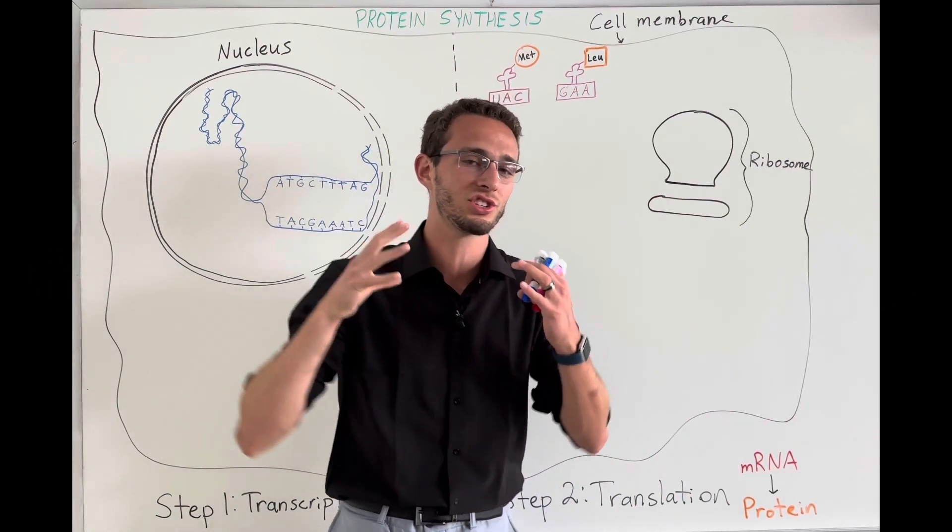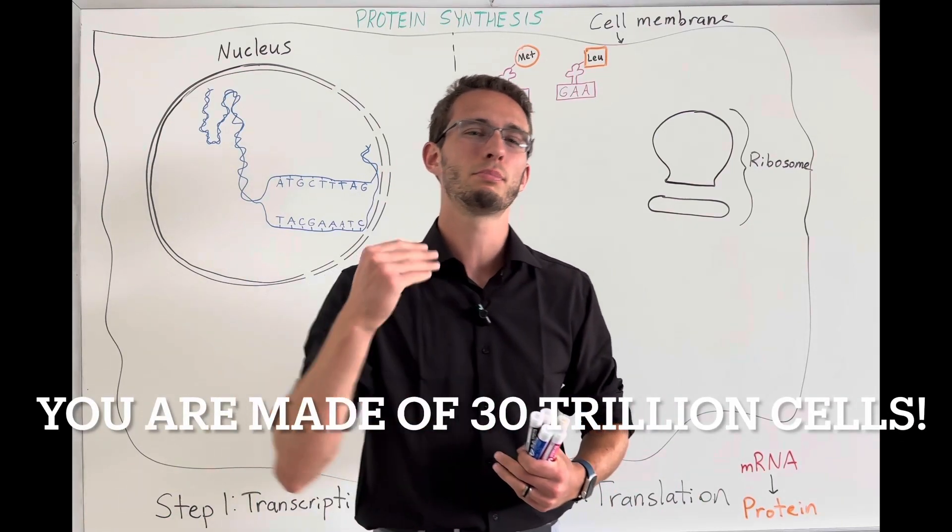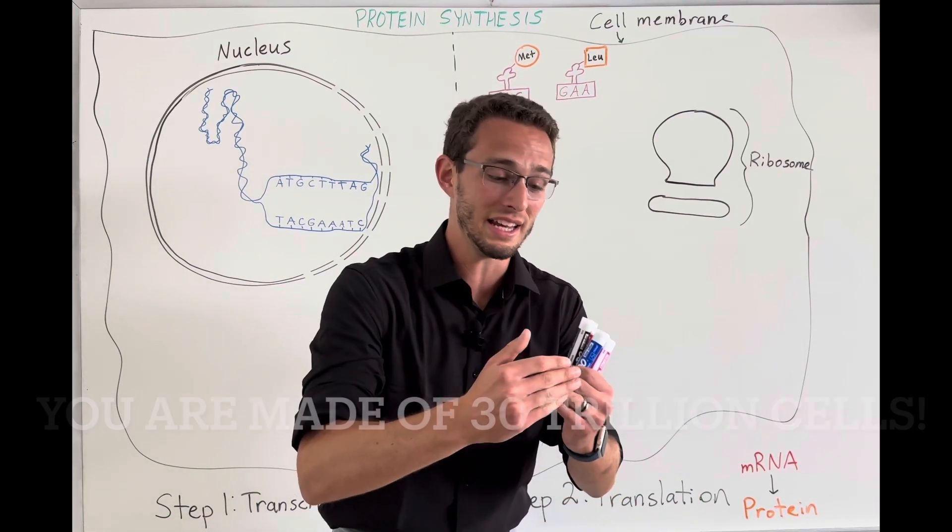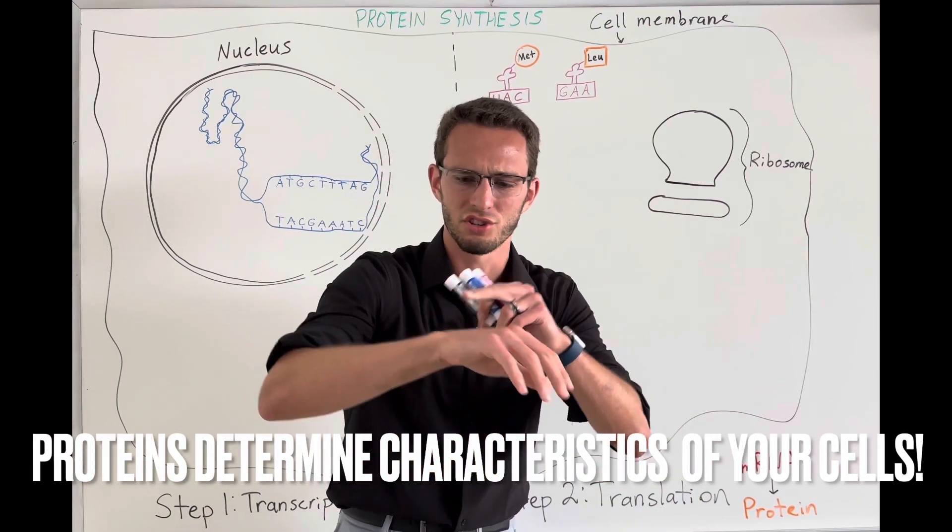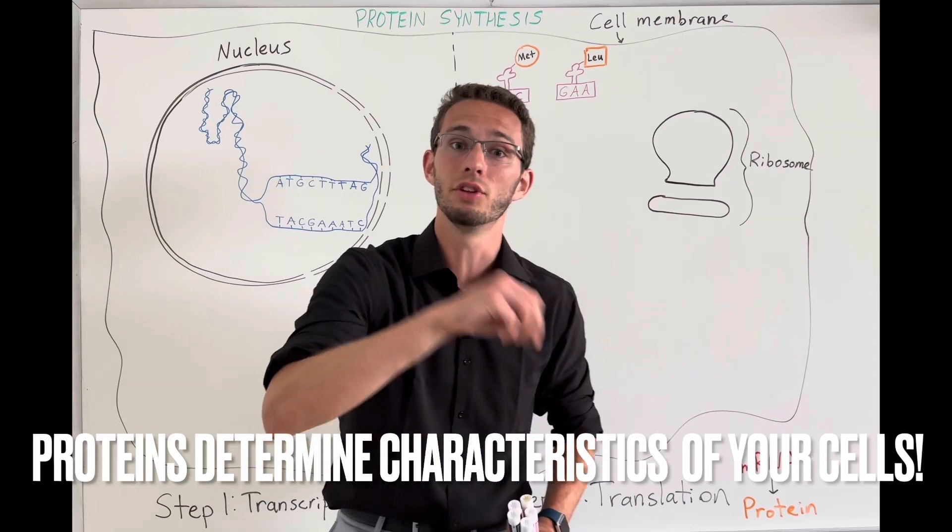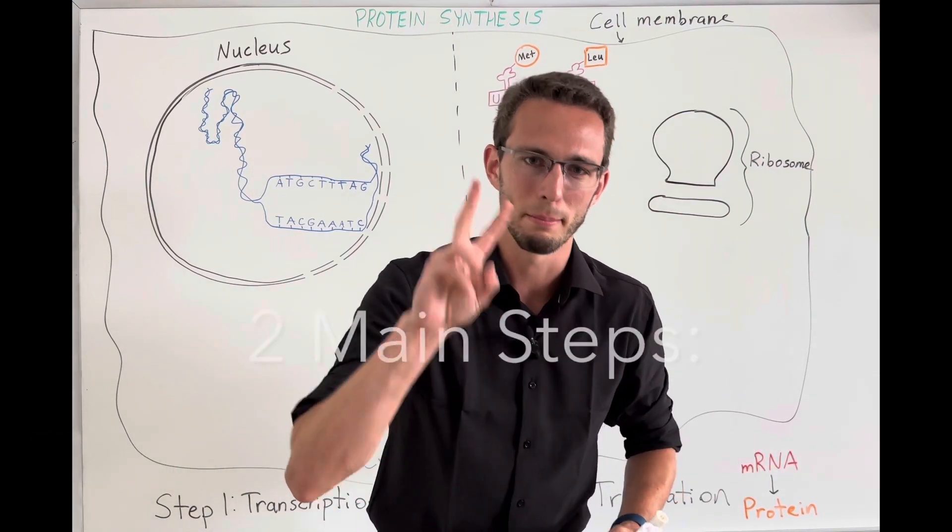This literally means how our cells, all 30 trillion of them in the human body, produce proteins which will then be the characteristics of those cells, whether they're muscle cells, whether they're brain cells or skin cells. The proteins build those cells.